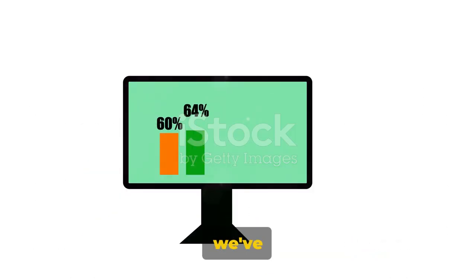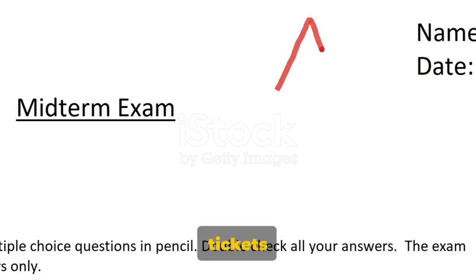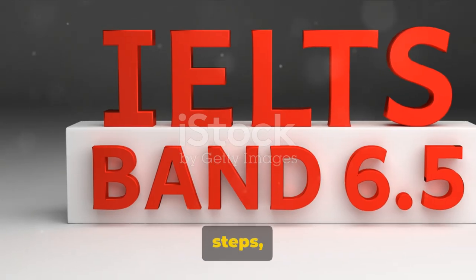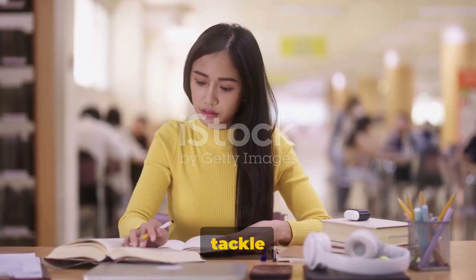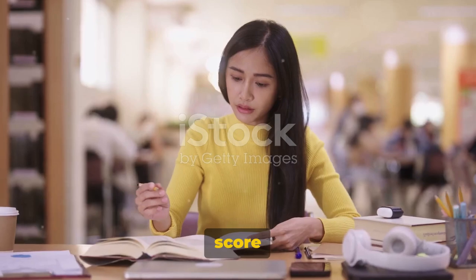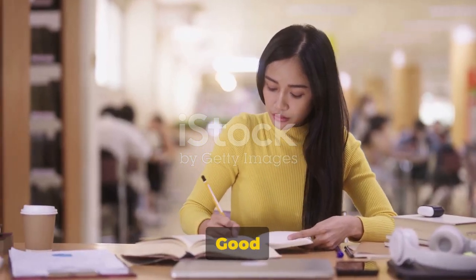Revisit the key points we've covered: understanding the bar chart, structuring your response, and crafting it with precision. They're your golden tickets to success. With these steps, you are now well-equipped to tackle IELTS writing task 1 and score that coveted 9 band. Good luck!